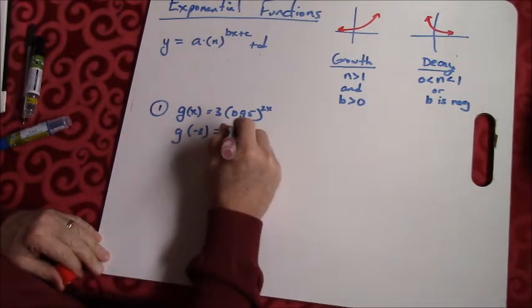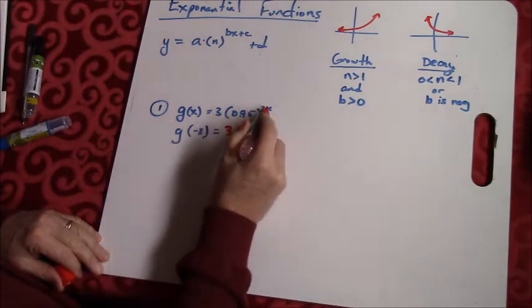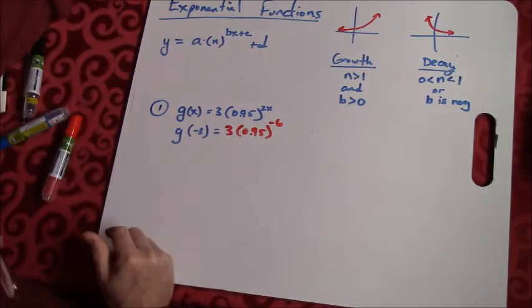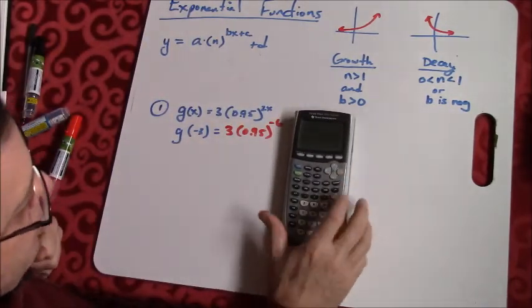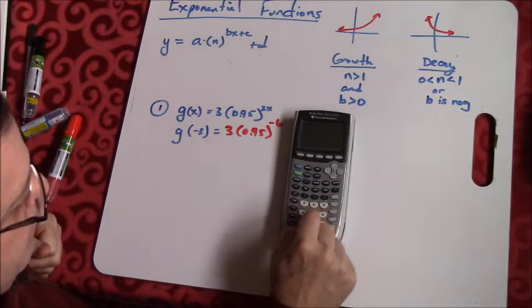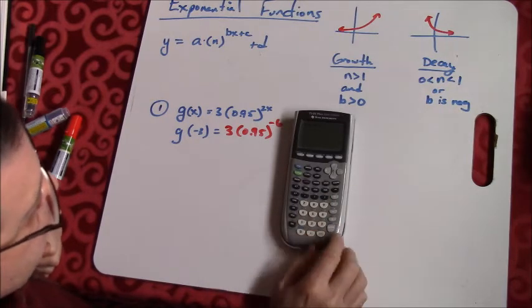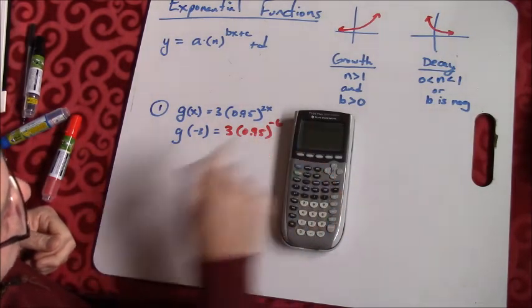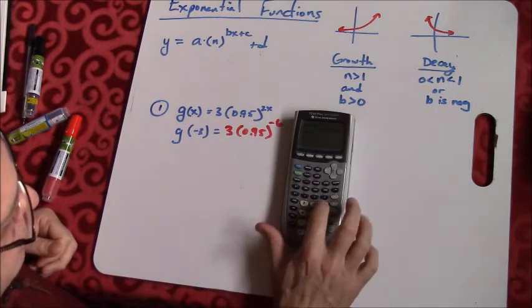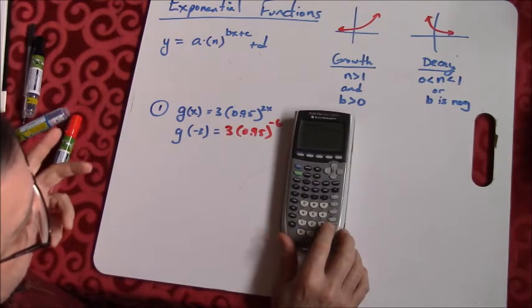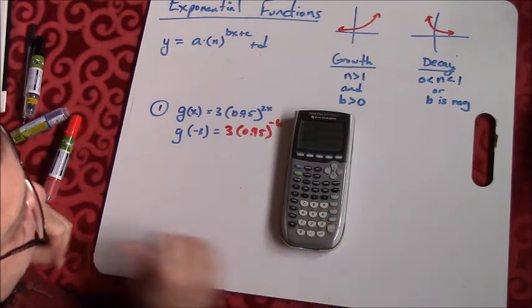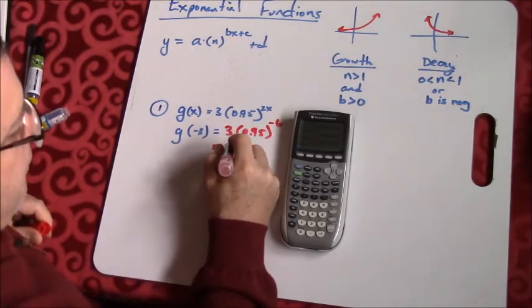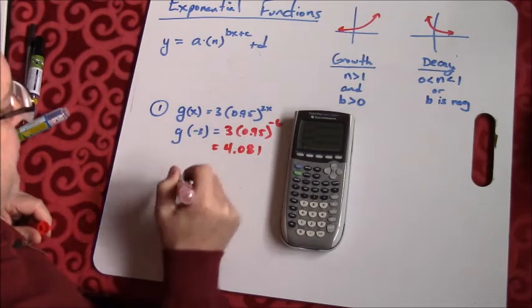So first of all, I'm going to have 3 times 0.95. If I plug a negative 3 into here, I'm going to get negative 6. Remember, you've got to do exponents first before multiplication. Our calculator will handle that. If I do 3 and then in parentheses 0.95 raised to the negative 6th power, there's what I get. And our calculator knows you do the exponent first, then multiply by 3. So this equals 4.081. There's my answer.